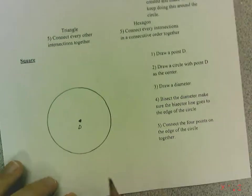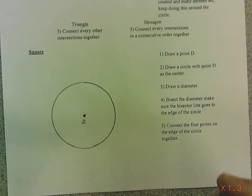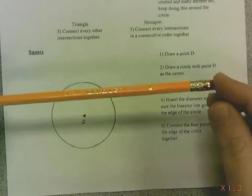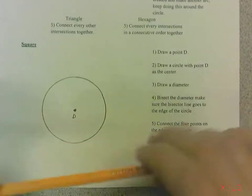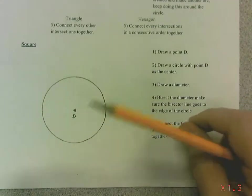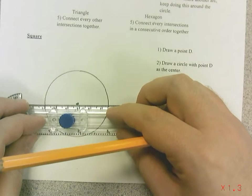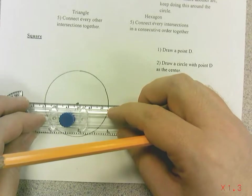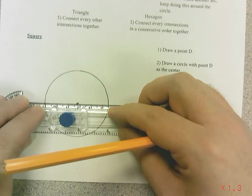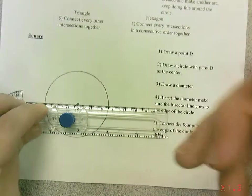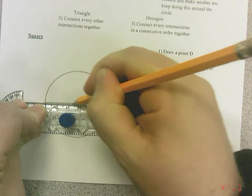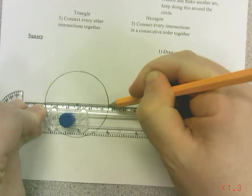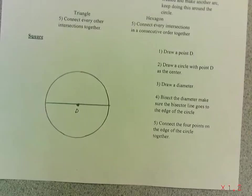Then it wants me to draw a diameter. Remember, a diameter is a line that goes from side to side but also passes through the center point. So I just line up the flat edge of the compass through the center point and draw a line — we get kind of a pokeball here.